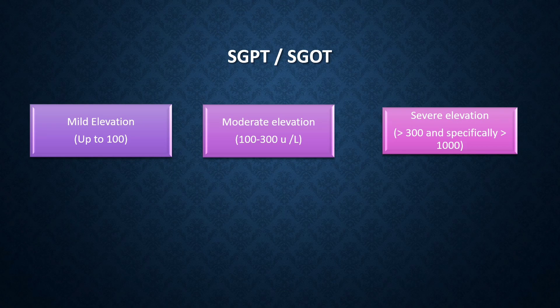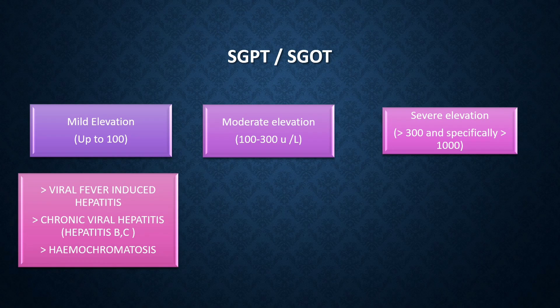Mild elevation of SGPT and SGOT is seen in viral fever-induced hepatitis — any viral fever like dengue, swine flu, or COVID — which can lead to mild elevation in SGPT and SGOT. Malaria or any other cause of fever can also cause mild elevation, because whenever there is damage to the hepatocyte it leads to mild elevation of these liver enzymes. Other conditions include chronic viral hepatitis like hepatitis B, hepatitis C, and hemochromatosis.